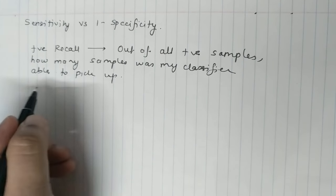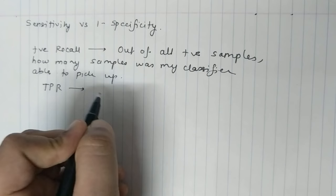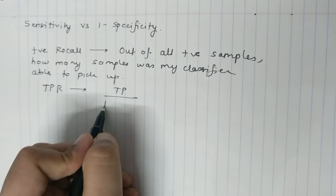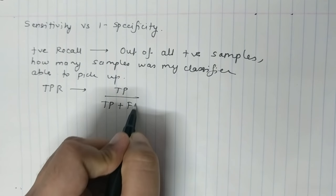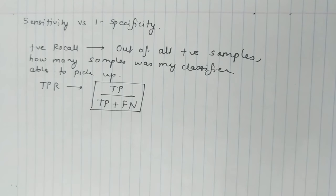So sensitivity is also called as true positive rate. The formula for this is TP, that is true positive, upon TP plus FN where FN is false negative. I hope this is clear.